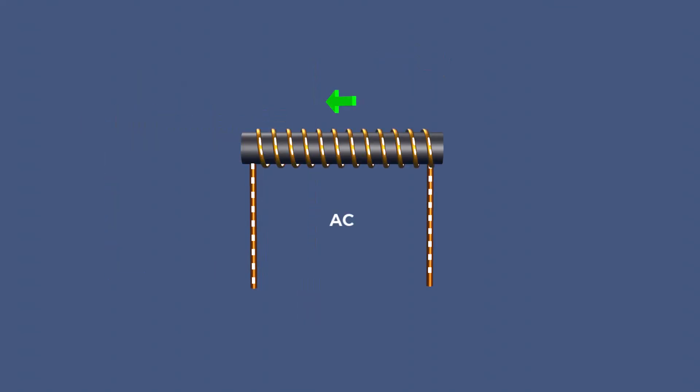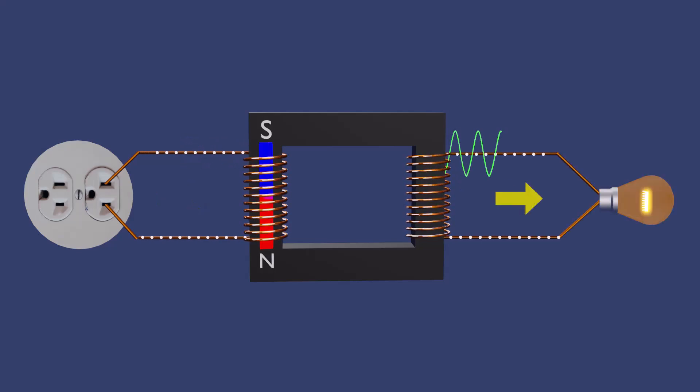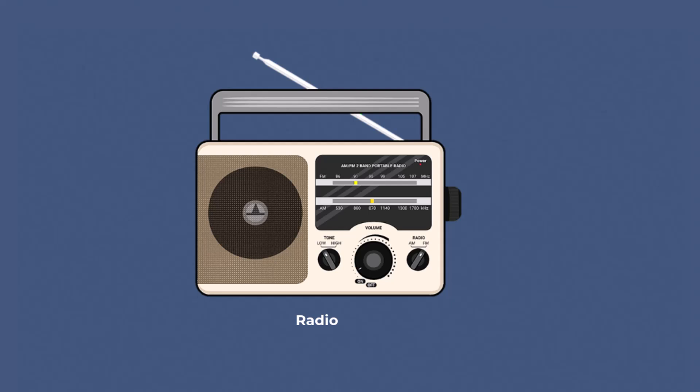In AC circuits, the current alternates direction, producing a time-varying magnetic field. The inductor responds to this fluctuating current by continuously changing its magnetic polarity. This behavior is at the core of how inductors regulate energy flow in AC circuits, such as in transformers or tuning circuits.